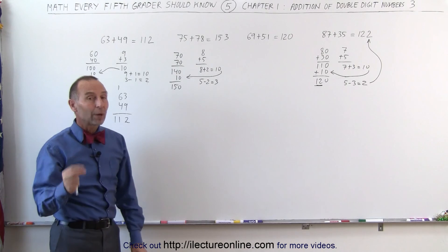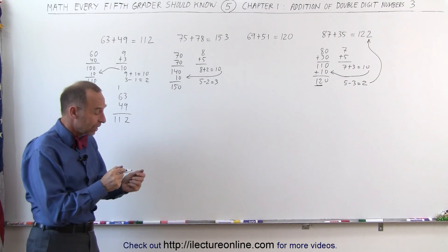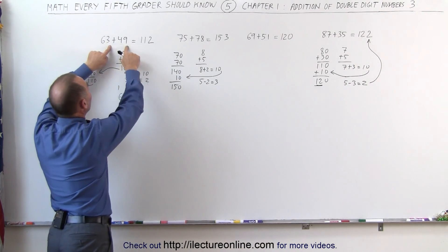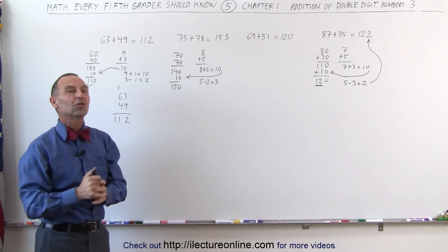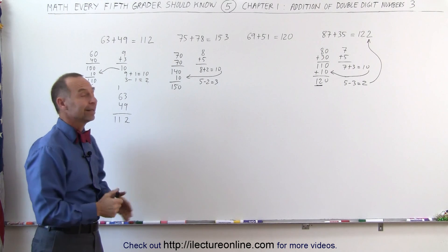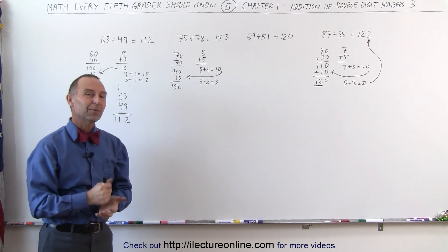And that's how we can quickly add two double-digit numbers together, where in both, with the first two numbers and the last two numbers, add up to 10 or more. And that's how we can quickly find the solution in our head without having to write it down. And that's how it's done.